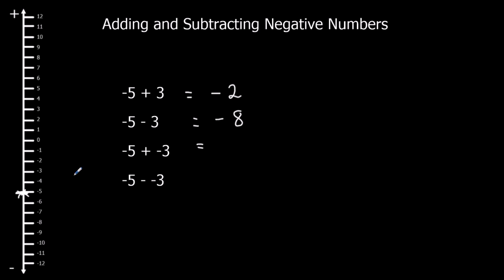Now I've got minus 5. I'm adding, so I'm going to go up — but minus 3 spaces, so that means down: 1, 2, 3 — minus 8. So plus minus just means minus. And minus 5 again as my starting point — I'm going to go down, but minus 3 spaces, so that means up: 1, 2, 3 — minus 2. So minus minus just means plus.